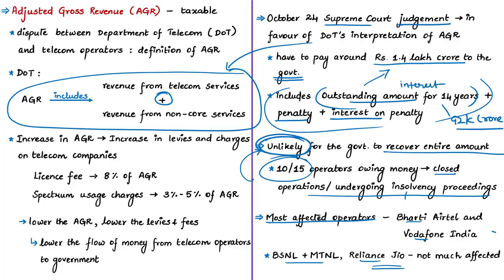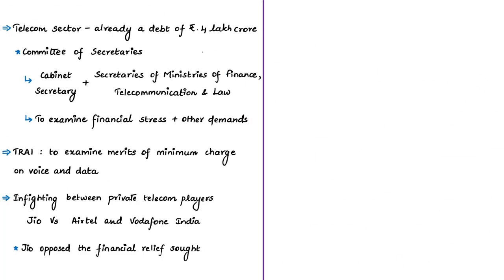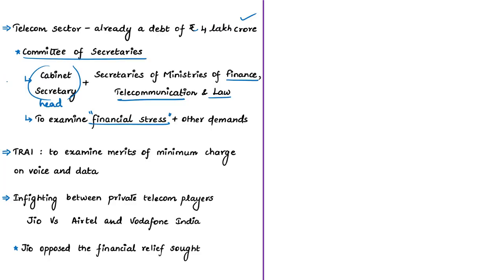In this scenario the Supreme Court verdict acts as a big blow to the industry. The government has admitted the telecom sector requires support and has announced a Committee of Secretaries to examine the financial distress and recommend mitigation measures. This committee will be headed by the Cabinet Secretary and includes secretaries of the Ministry of Finance, Ministry of Telecommunication, Ministry of Law, and others. It will consider long-standing industry demands such as reduction in spectrum usage charges and a delay in paying spectrum dues for the next two financial years.